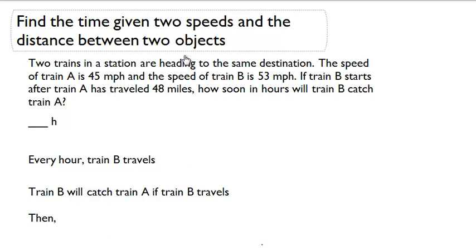The speed of train A is 45 miles per hour, and the speed of train B is 53 miles per hour. If train B starts after train A has traveled 48 miles, how soon in hours will train B catch train A?